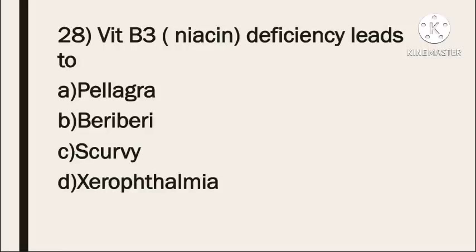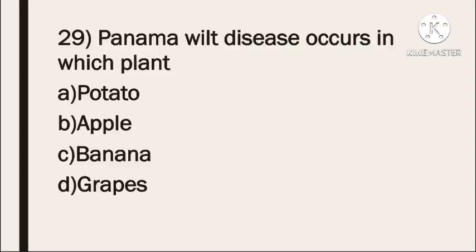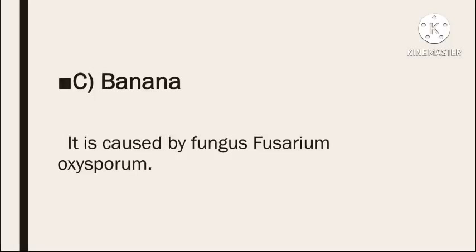Next question: Vitamin B3 (Niacin) deficiency leads to — Option A: Pellagra. Option B: Beri-Beri. Option C: Scurvy. Option D: Xerophthalmia. The correct answer is Pellagra. Next question: Panama wilt disease occurs in which plant? Option A: potato. Option B: apple. Option C: banana. Option D: grapes. The correct answer is banana — Panama wilt disease is caused by the fungus Fusarium oxysporum.